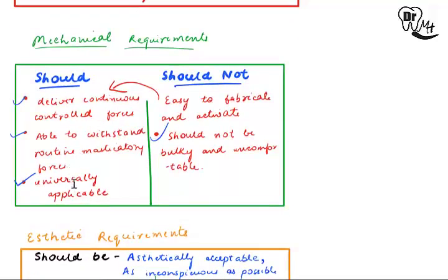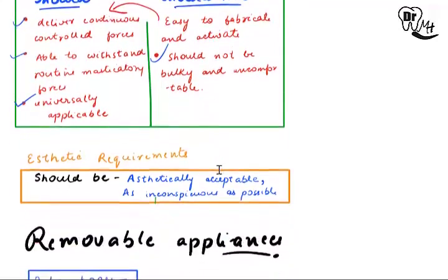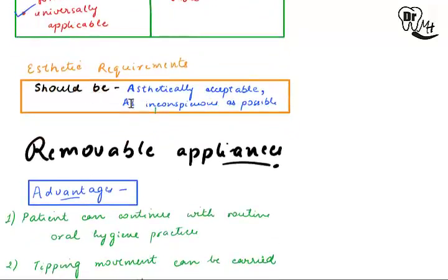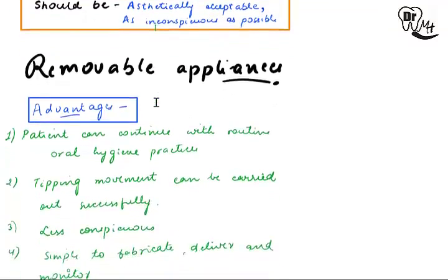Appliances should be able to withstand routine masticatory forces and should not break. They should be universally applicable, meaning any dentist anywhere in the world can fabricate and apply them following a certain set of rules. They should be easy to fabricate and activate. They should not be bulky and uncomfortable — the bulk mainly comes from the base plate component. The aesthetic requirement is that appliances should be aesthetically acceptable, as inconspicuous and hidden as possible in the patient's mouth.